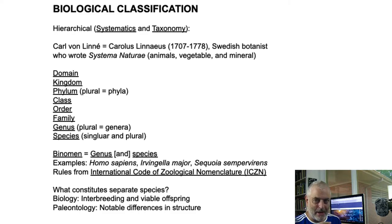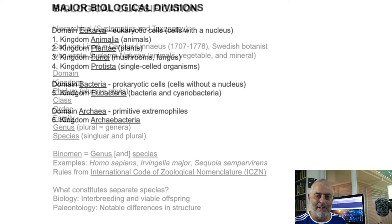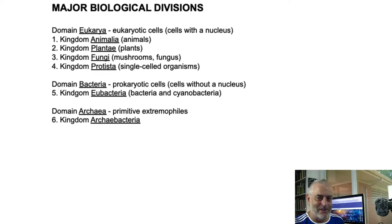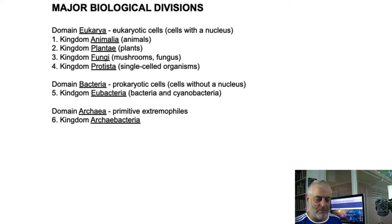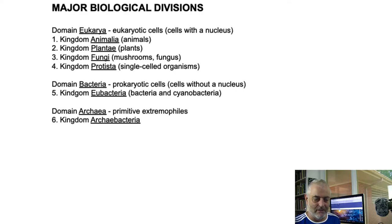In paleontology, when you look at the fossil record, you can't show if something was interbreeding or not — you can't stick two fossils together and expect to find new fossils. So instead we look for notable differences in structures. For instance, in gastropods — the snails — we typically think of shell ornamentation in paleontology. If you have a different ornament than some other genus, it's going to be considered a different genus. That's how we go about identifying species as fossils.